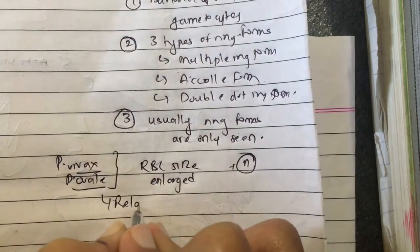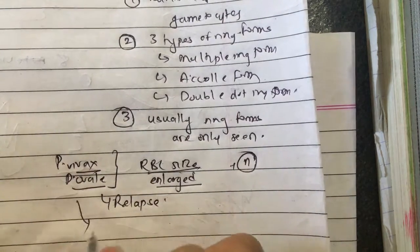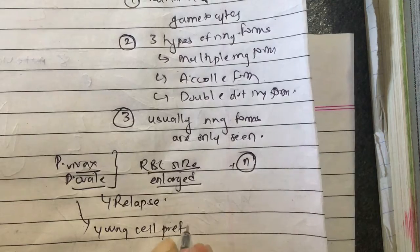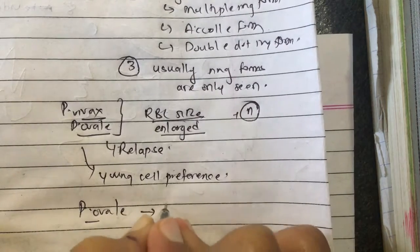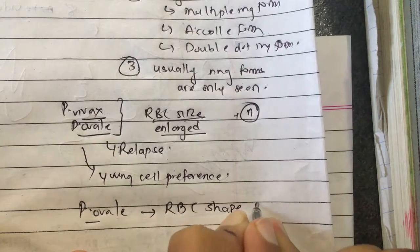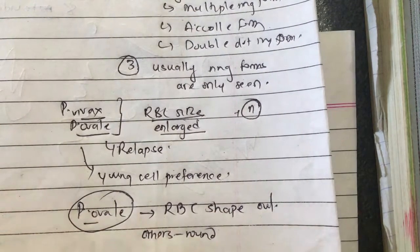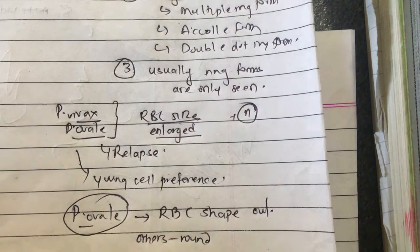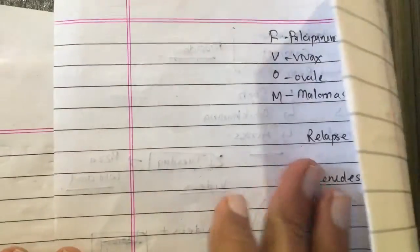Relapse occurs in Plasmodium vivax and Plasmodium ovale. There is also young cell preference in Plasmodium ovale. In Plasmodium ovale, the RBC shape is oval, whereas in other types of plasmodium the RBC shape is round.